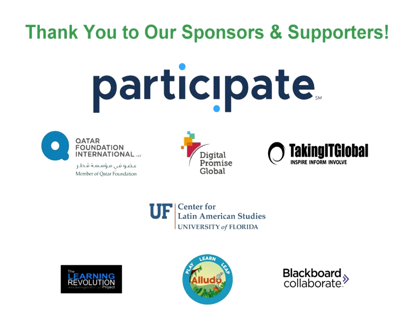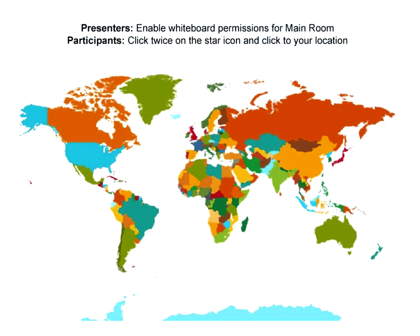So without further ado, thank you to our sponsors. Now I'm going to enable the whiteboard privileges, and to the left of the map you'll see a set of tools. If you click on the star, you can double-click on it and then click on your location on the map and tell us where you are in the world in the chat. I am in Northbrook, Illinois, which is just outside Chicago.